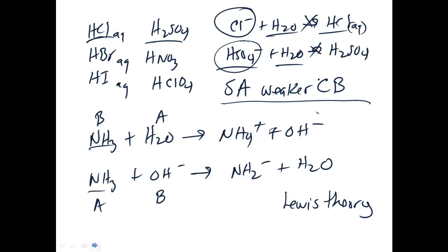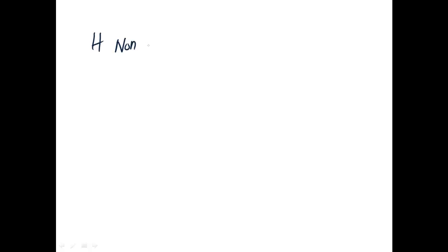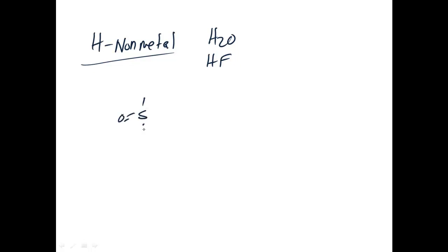One more thing you need to know: if you're unsure whether something is an acid, when you see hydrogen attached to a nonmetal other than carbon or silicon, those are generally going to be acidic. For example, H₂O is amphoteric and HF is definitely an acid. Another indicator: if you look at something like sulfuric acid and draw a Lewis structure for it, you can see it's a nonmetal hydroxide — and nonmetal hydroxides are acids.